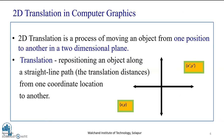So, what is translation? As we are understanding, 2D means the translation that happens in two dimensions. So, 2D translation is a process of moving an object from one position to another in a two-dimensional plane. Here, in translation, repositioning of an object along a straight line path from one coordinate location to another takes place.